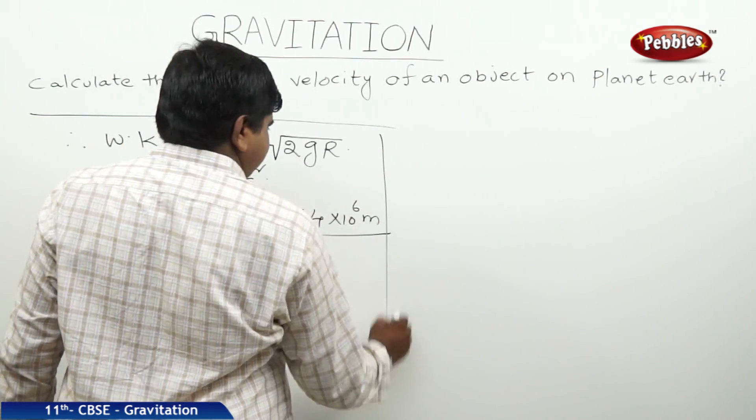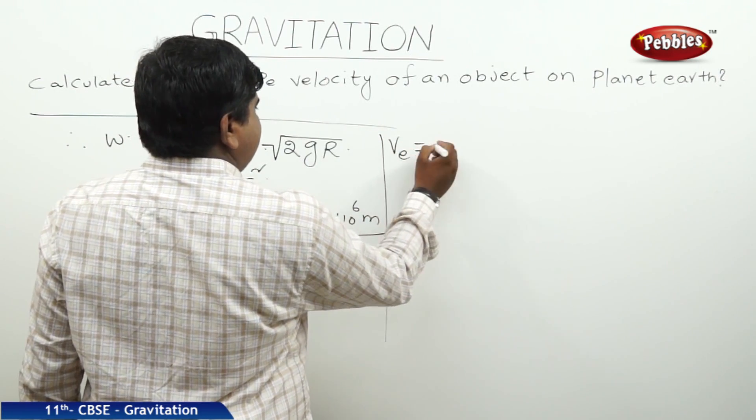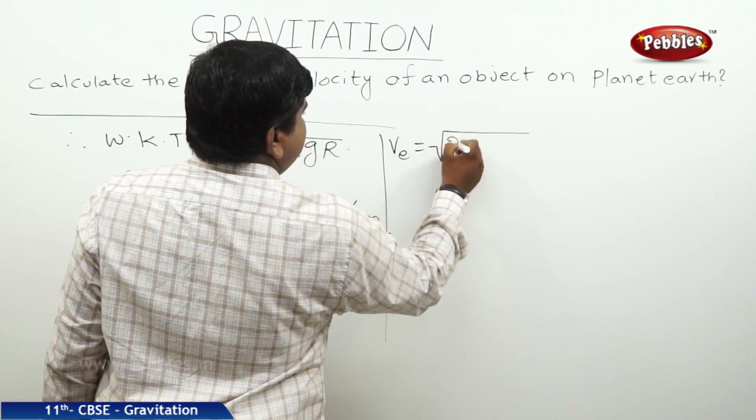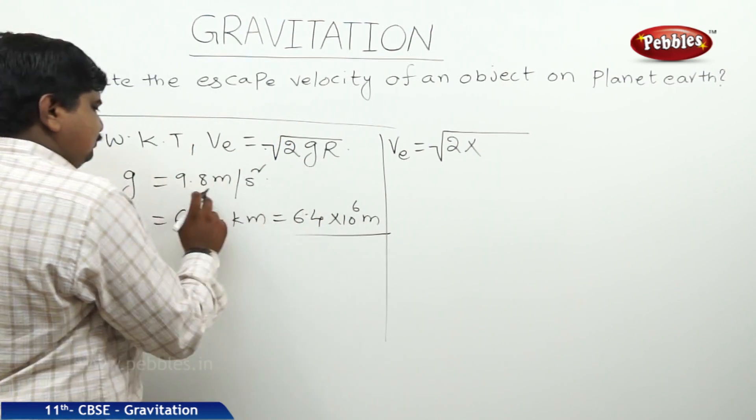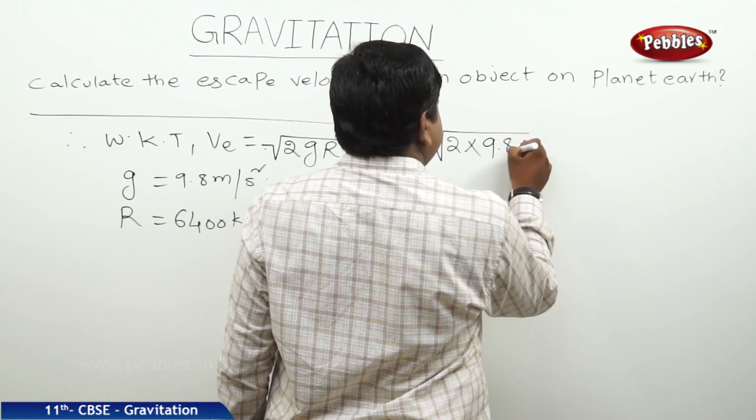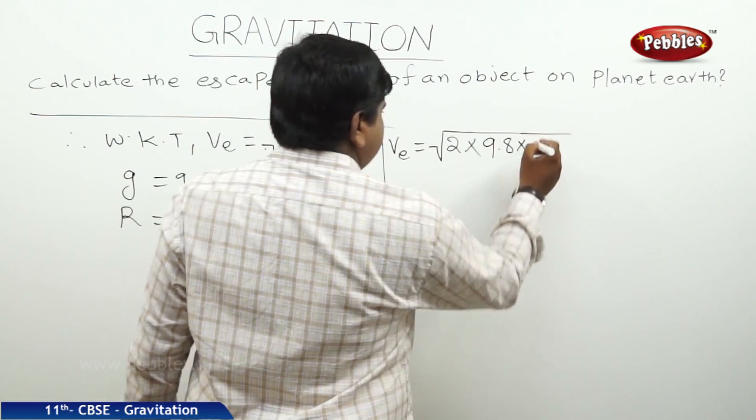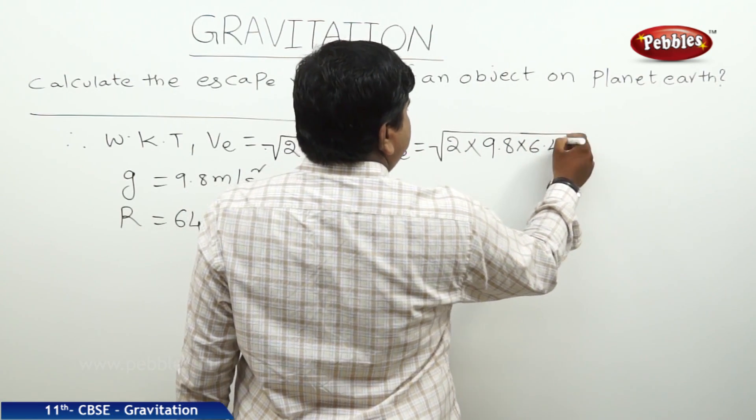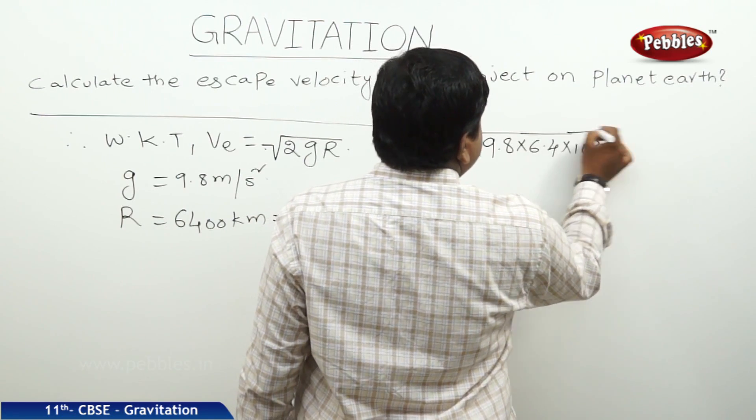So, now we are substituting. VE is equal to square root of 2 into G is equal to 9.8, R is equal to 6.4 into 10 to the power of 6.